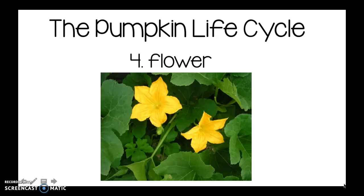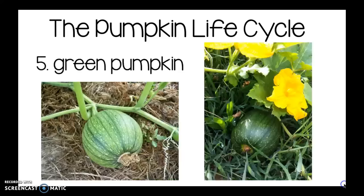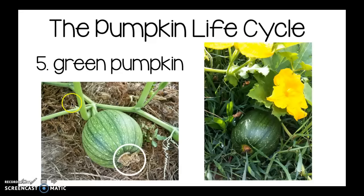Next, on the vine grows a flower — a flower is like a blossom that we learned about in the apple life cycle. A pumpkin flower is really pretty, green and yellow. The yellow flower will die and turn into a green pumpkin. If you notice at the bottom of this green pumpkin, you can see where there used to be the yellow flower, but now it's dead. You can also see that the green pumpkin is still connected to the vine because it's still growing.